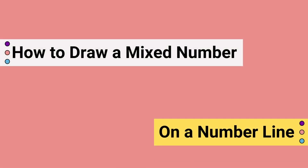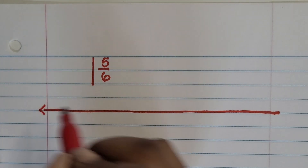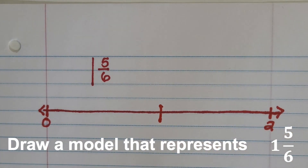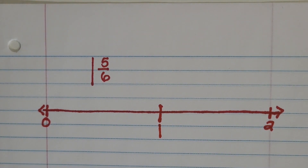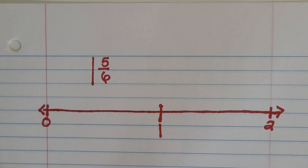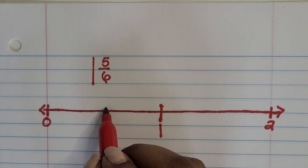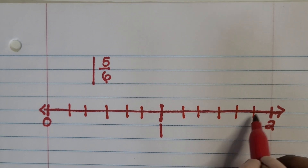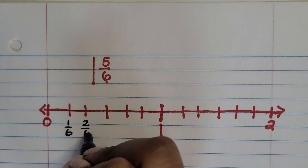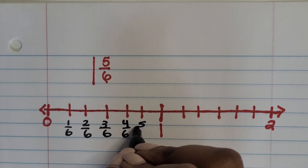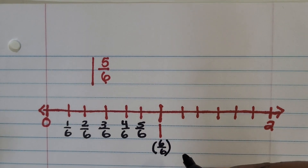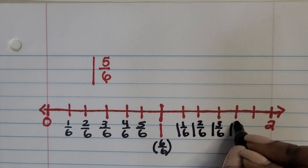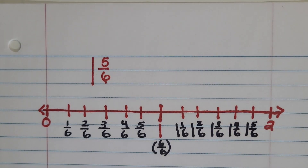We'll show how to draw a mixed number on a number line using lined paper. We have one and five sixths, so we need at least two wholes. Our first endpoint is zero, our second endpoint is two, and the middle represents one whole. Our denominator tells us six equal parts per whole. Partition each hole down the middle, then create thirds on each side of those halves — altogether giving six equal parts. Label the first whole up to six sixths, then label the second section using mixed numbers all the way to one and five sixths.